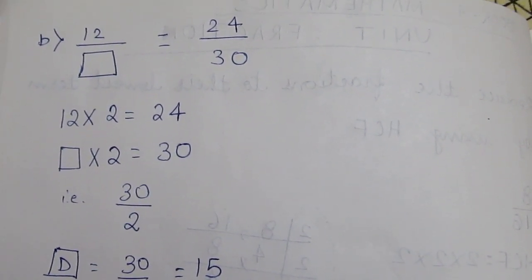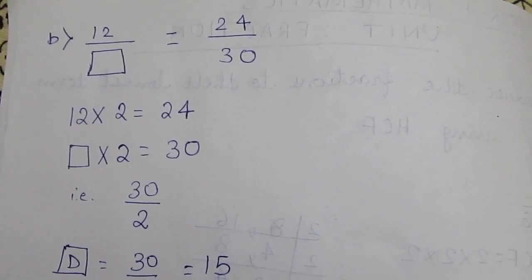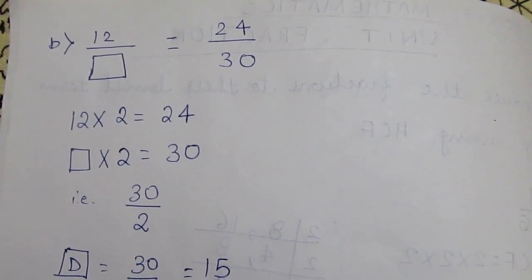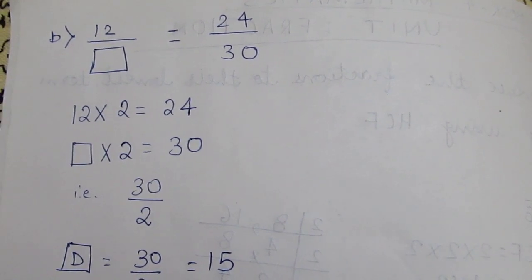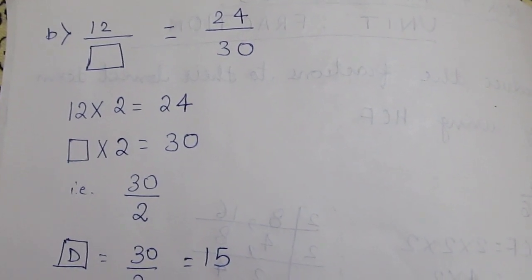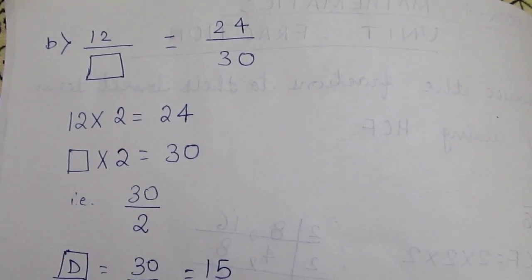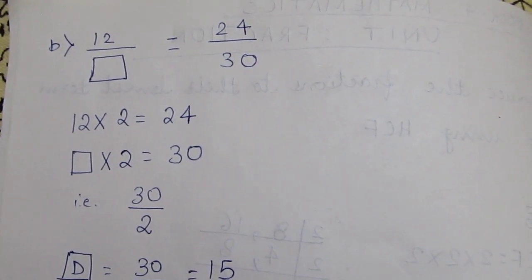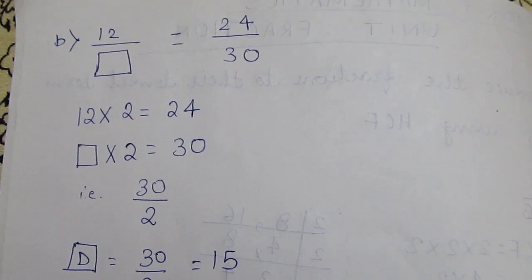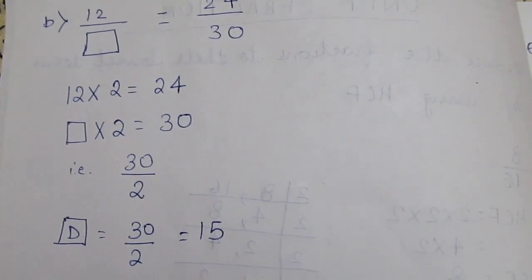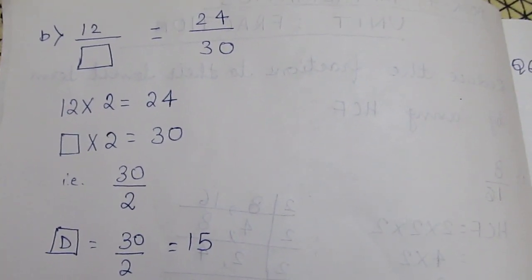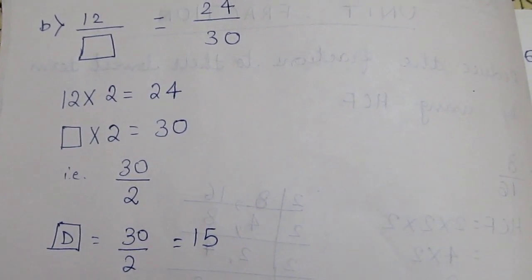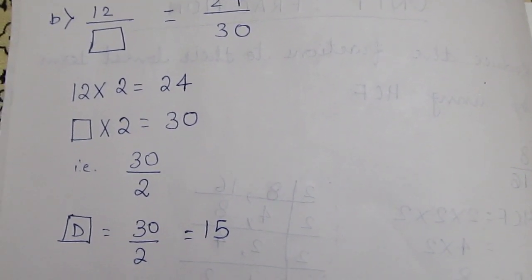Here, the denominator of lower term is missing. Therefore we will take the numerator: 12 times 2 gives 24. So the missing denominator times 2 should give 30. That means if we divide 30 by 2, the answer is 15.